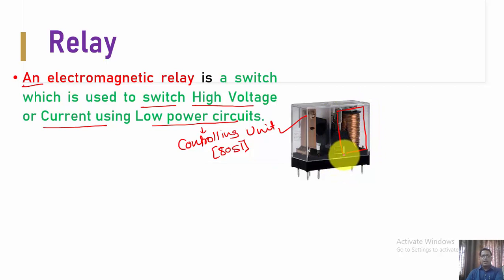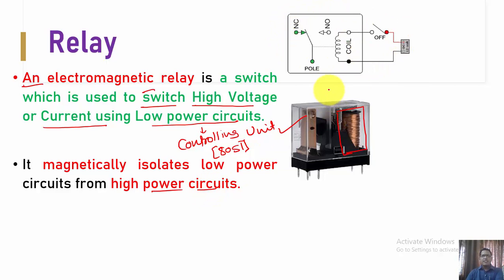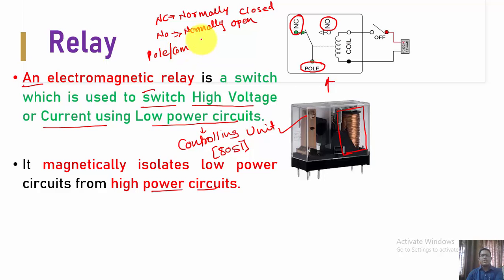Inside the relay there is one coil. Depending upon the electromagnetic induction principle, the current or voltage going through this device allows us to control various appliances. It is magnetically isolated from the high-power circuit. It mainly consists of different terminals: one terminal is called NC, which stands for normally closed, and NO stands for normally open. There is also a pole, which is called the common terminal.